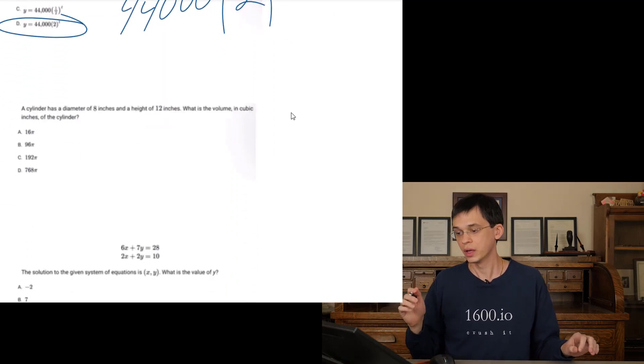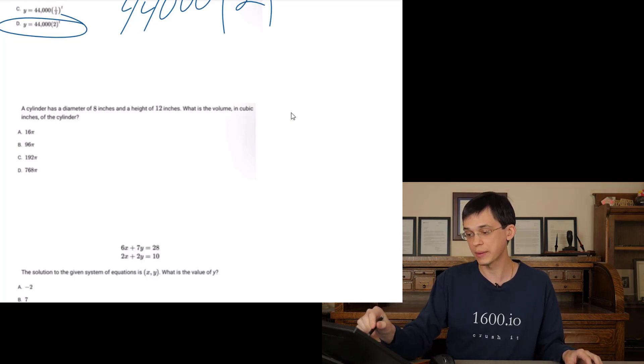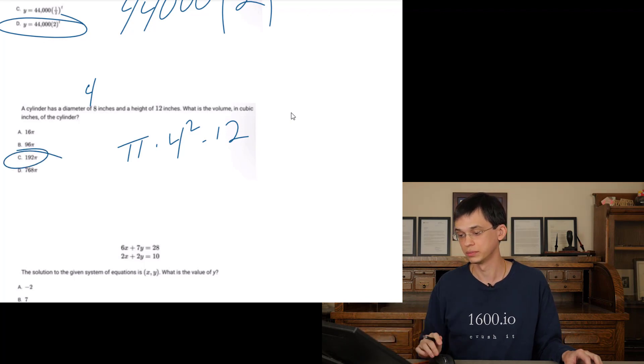A cylinder is a diameter of 8, height of 12. What is the volume? Volume of a cylinder is going to be pi r squared times h, the area of the base times h. So if the diameter is 8, then the radius is 4. So pi times 4 squared times 12 is going to be 16 times 12 is going to be 192 pi.